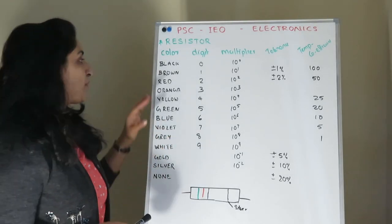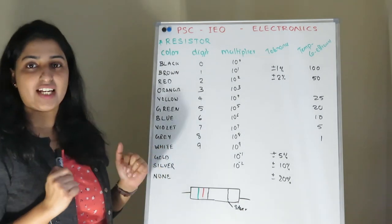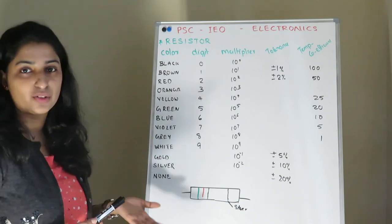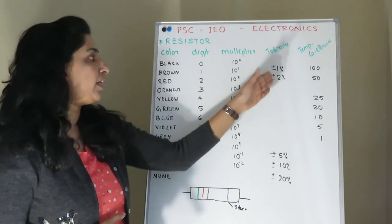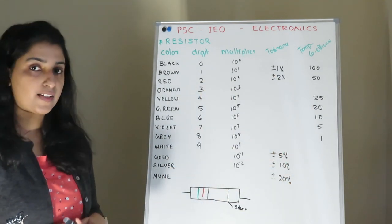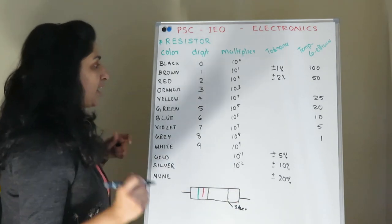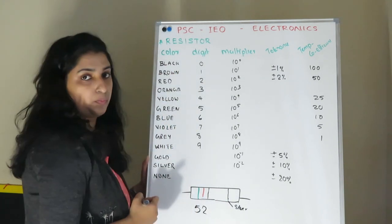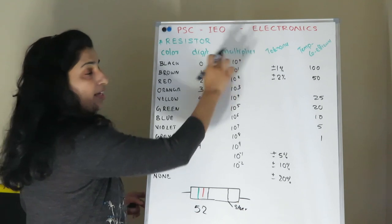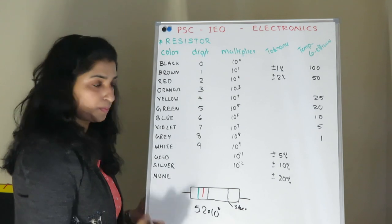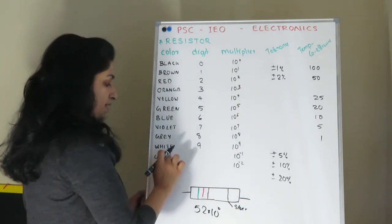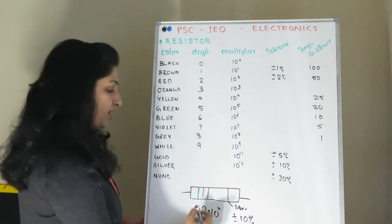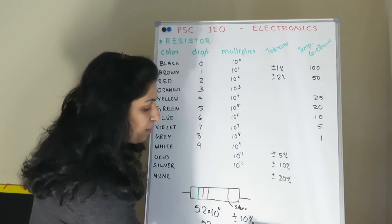This is the color coding chart. A mnemonic to remember the colors is: Black, Brown, Red, Orange, Yellow, Green, Blue, Violet, Gray, White, with Gold and Silver for tolerance. For example, a resistor with bands green, red, black, silver: green is 5, red is 2, black is multiplier 10 raised to 0, and silver is tolerance plus or minus 10%. So the value is 52 ohms with plus or minus 10% tolerance.